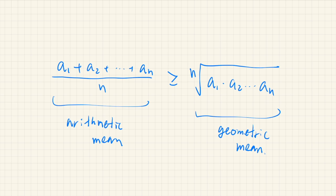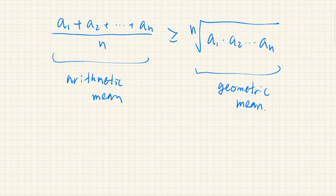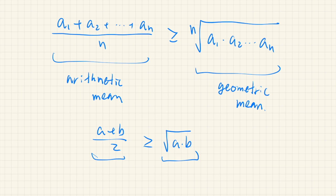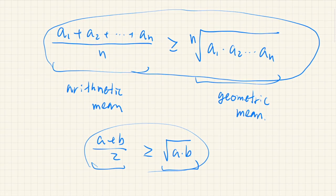We are going to prove this. Maybe you have seen a simpler version: (a + b) / 2 is greater than or equal to the square root of a times b. This is just the arithmetic mean of two numbers, and that is the geometric mean of the same two numbers. Showing this was easy, but showing the general version requires a bit more tricks.